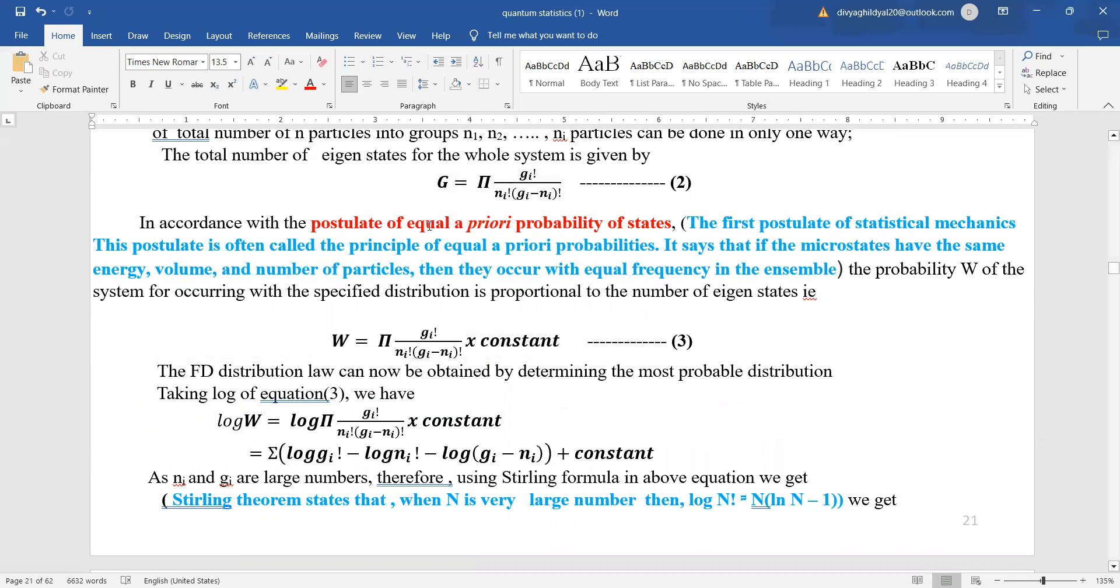Now, in accordance with postulate of equal a priori probability of states, what does this mean? This is the first postulate of statistical mechanics which says that if the microstates have the same energy, volume, and number of particles, then they occur with equal frequency in the ensemble. So the probability of the system occurring for a total will be equal to product gi factorial upon ni factorial into gi minus ni factorial into constant.